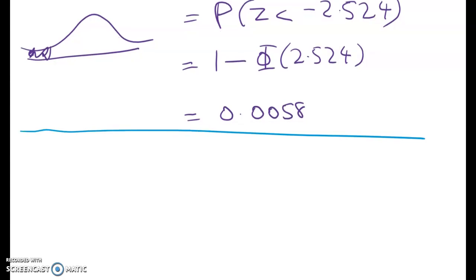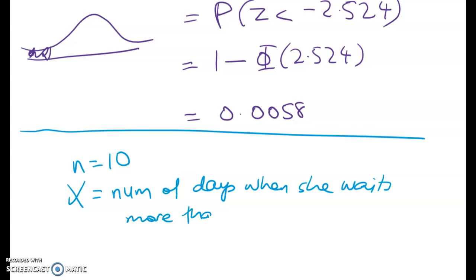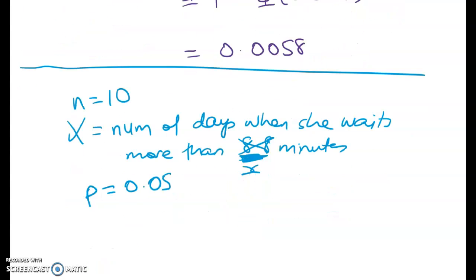Here's what I'm looking for. We know that we're going to say that n is equal to 10 and let x be the number of days when she waits more than more than what was it? I think it was 8.8 minutes. But you don't have to work this number out to do this question right. You can work this question through with just knowing that the chances that she has to wait more than that time is five percent.